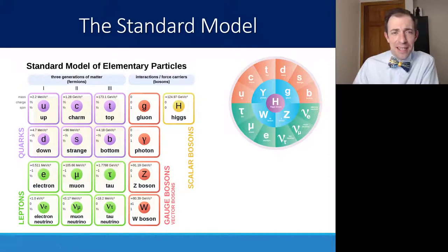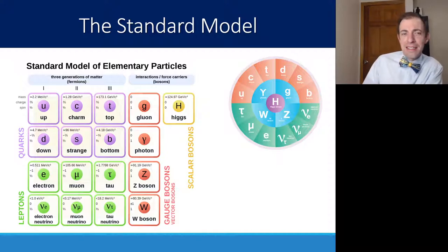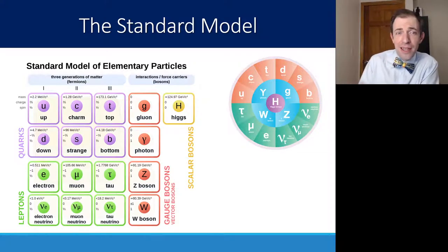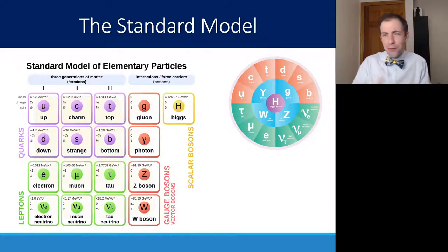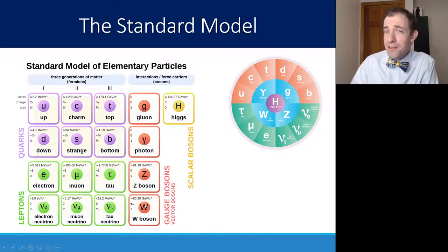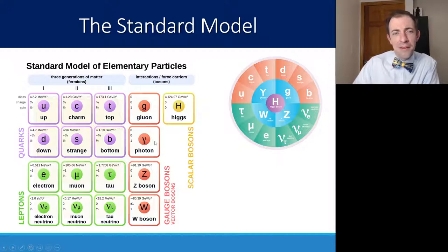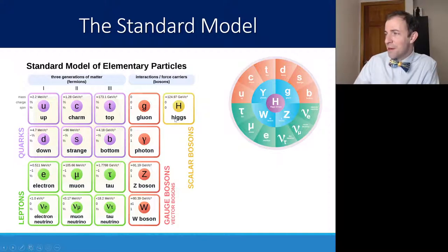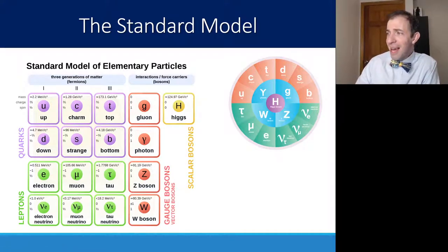Here is the standard model. This is basically the periodic table of particle physics, and it's a way of organizing these particles into categories as well as trends. You'll notice that the quarks are all connected together, as well as the leptons. The red particles here are the force carriers: the gluon for the strong nuclear force, the photon for electromagnetic force, and the Z and W bosons for the weak force. And then here is a boson called the Higgs boson, which we will talk about in just a minute — it is kind of a part of all of these fields together.